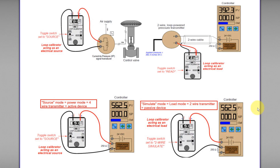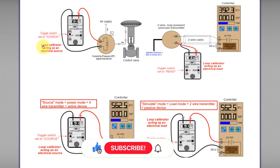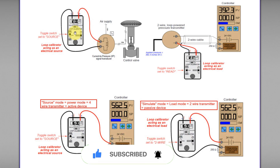Hello, today I am going to discuss about the loop calibrator: source mode, read mode, and simulate mode. A loop calibrator, sometimes called a signal calibrator, is a calibrator usually used by instrumentation technicians to inject a signal to the circuit, transmitter, or controller for simulation or testing purposes.